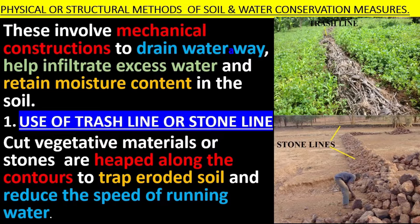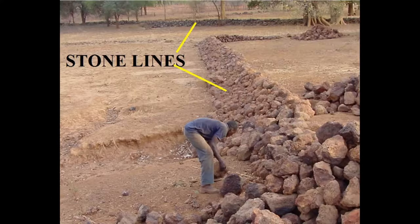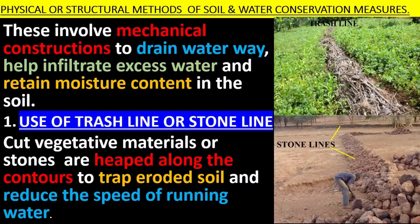Use of trash line or stone line. Cut vegetative materials or stones are heaped along the contours to trap eroded soil and reduce the speed of running water.